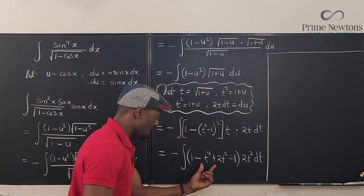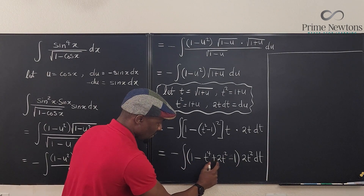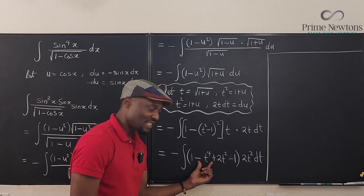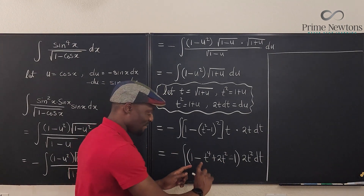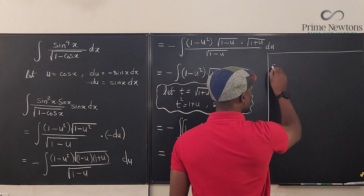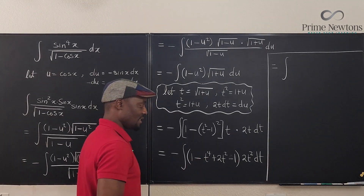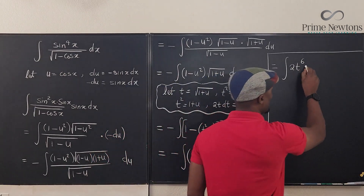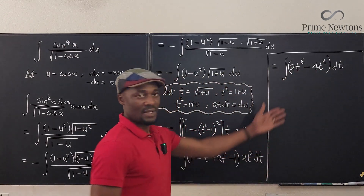The 1 minus 1 cancels, leaving minus t to the fourth plus 2t squared. When multiplied by 2t squared, this becomes minus 2t to the sixth plus 4t to the fourth. Bringing in the outer negative, the signs flip, giving us the integral of positive 2t to the sixth minus 4t to the fourth dt.